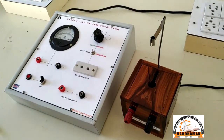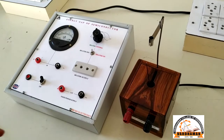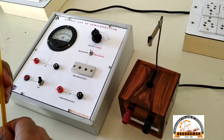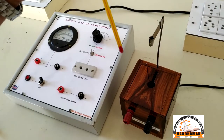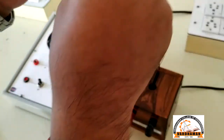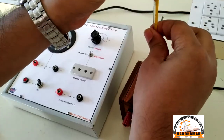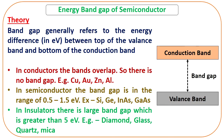By using this stand we can put the thermometer inside the oil like this. Now, what is the band gap of a particular material? The band gap is actually the energy difference between the top of the valence band and the bottom of the conduction band.